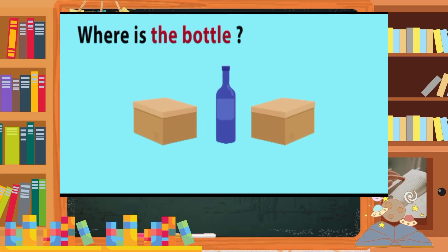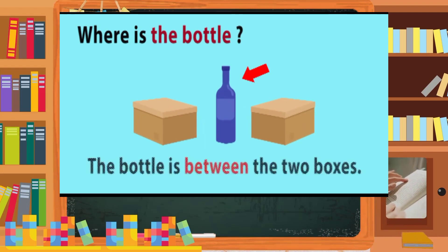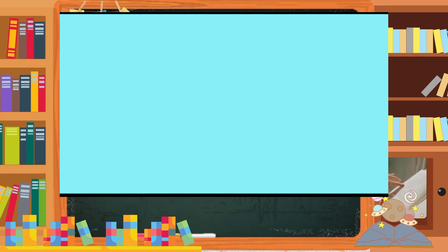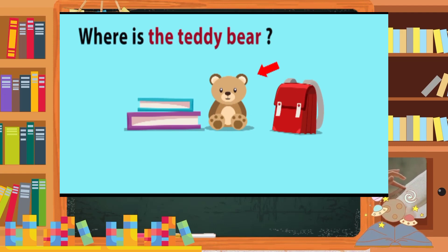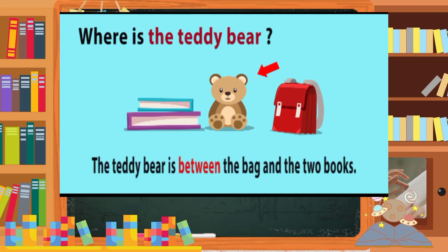Where is the bottle? The bottle is between the two boxes. Where is the teddy bear? The teddy bear is between the bag and the two books.